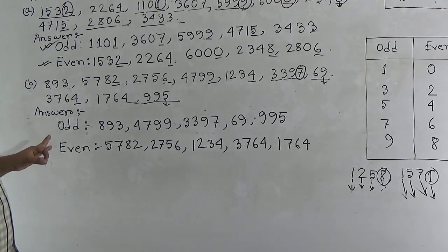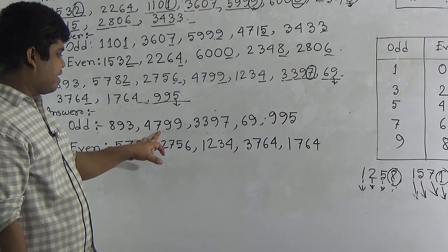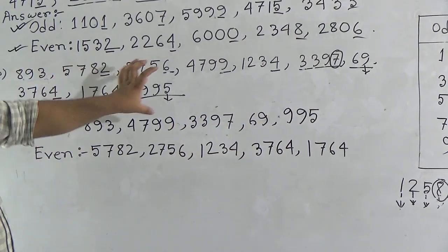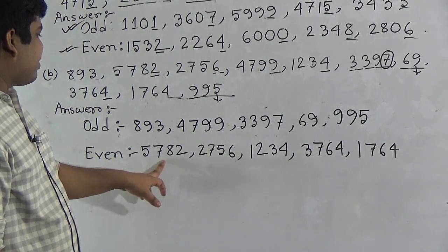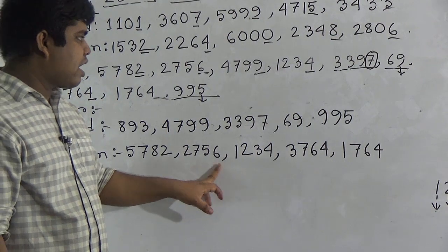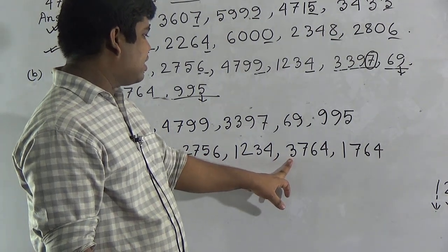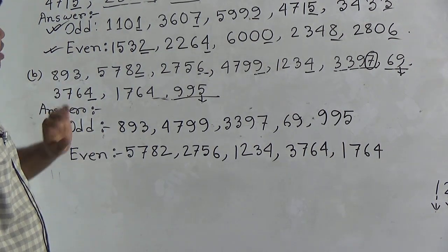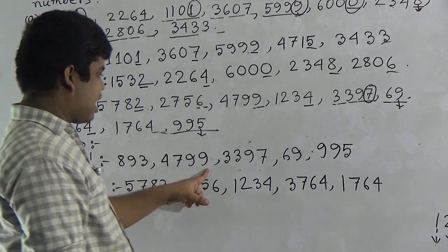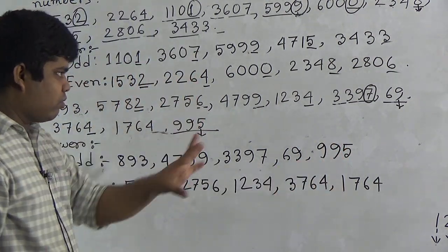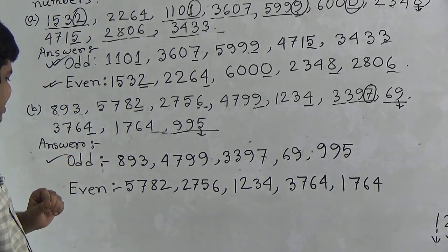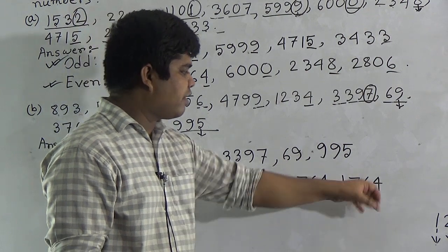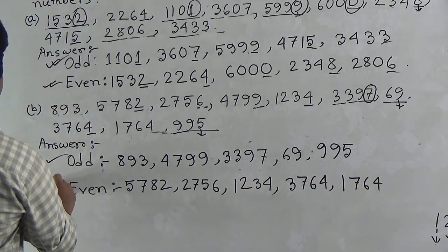My dear students, notice: eight hundred ninety-three, four thousand seven hundred ninety-nine, three thousand three hundred ninety-seven, sixty-nine, and nine hundred ninety-five are odd numbers from the following numbers. And five thousand seven hundred eighty-two, two thousand seven hundred fifty-six, one thousand two hundred thirty-four, three thousand seven hundred sixty-four, and one thousand seven hundred sixty-four are even numbers. We can verify: the last digits of odd numbers are three, nine, seven, nine, five — all odd. And the last digits of even numbers are two, six, four, four, four — all even. Even numbers are correct.